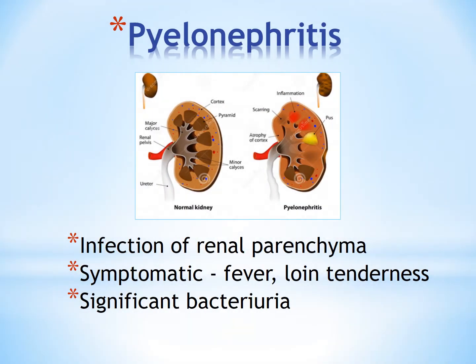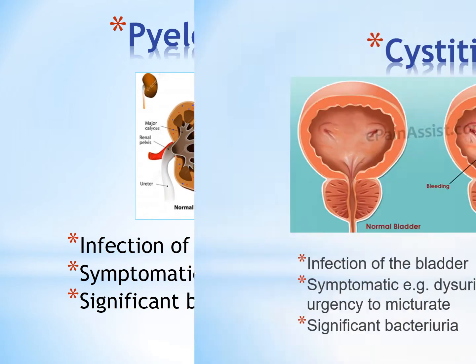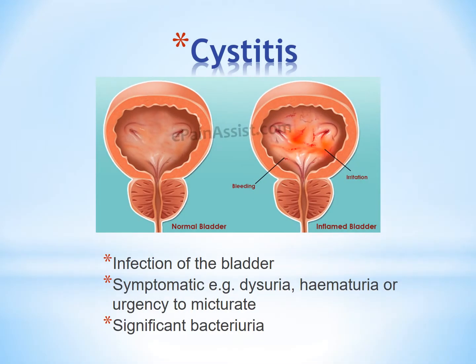Pyelonephritis is infection of the renal parenchyma. The child is symptomatic, usually presenting with fever and loin tenderness, as well as having evidence of significant bacteriuria. Cystitis is infection of the bladder. The child has symptoms such as dysuria, hematuria, or urgency to micturate, as well as having evidence of significant bacteriuria.